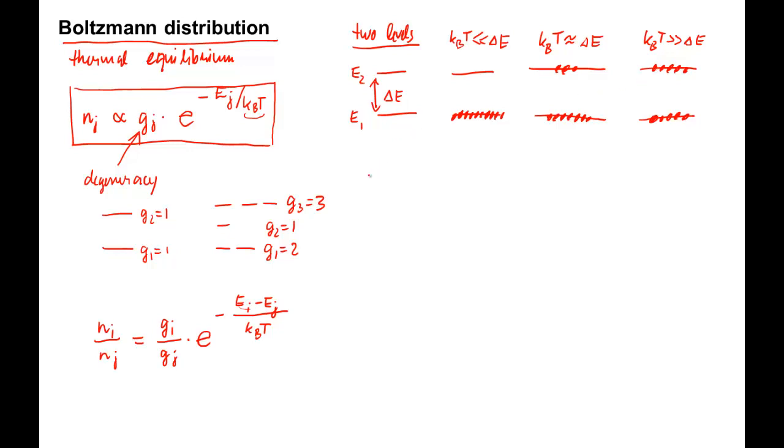For systems with many energy levels, the behavior is analogous. The higher the temperature, the more excited states get populated. Let's plot the energies on the vertical axis, and the populations on the horizontal axis. Let's take a discrete energy spectrum. At low temperatures, mostly the lowest states will be occupied.